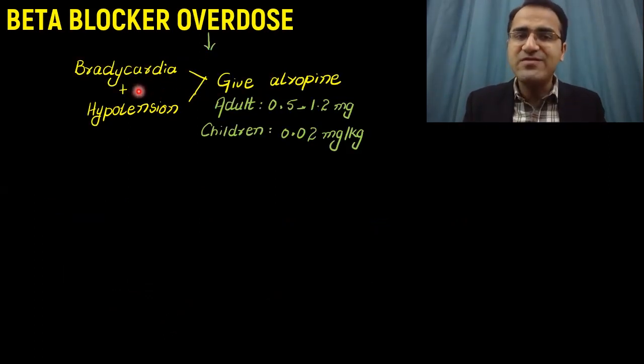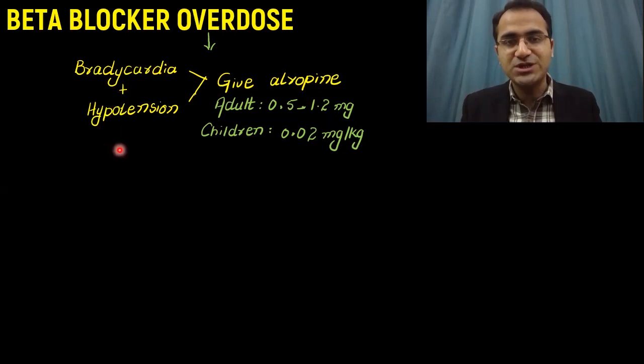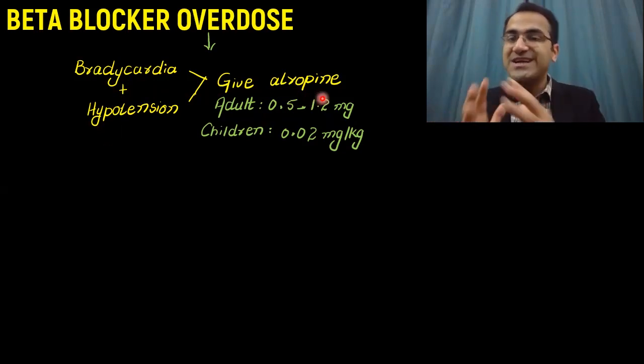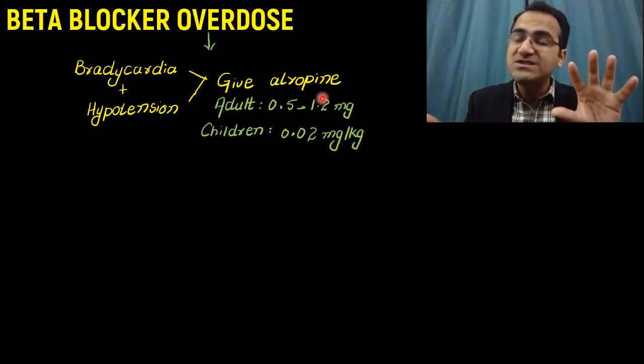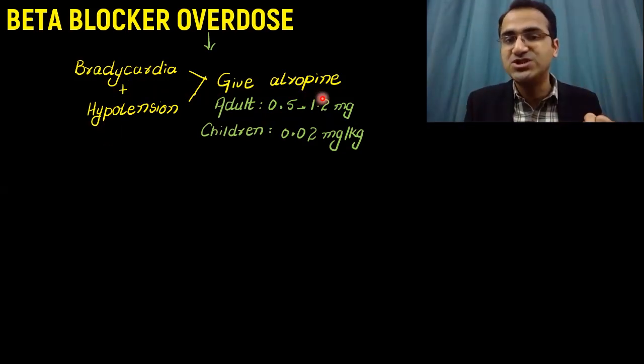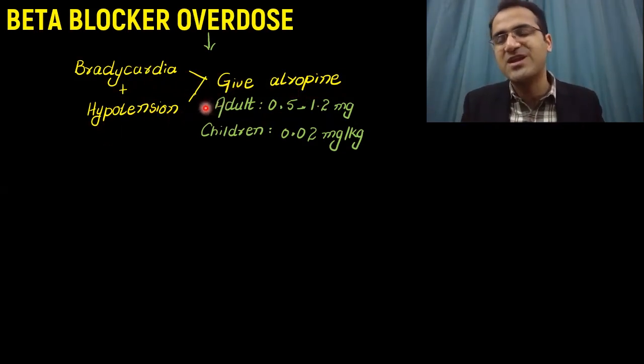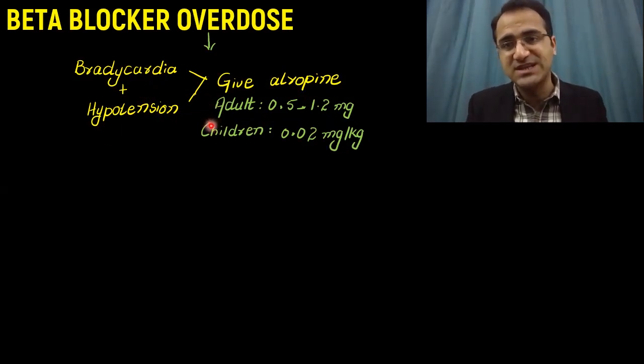If the patient is having bradycardia with hypotension, you have to give atropine. Atropine is an anticholinergic agent. It blocks the parasympathetic nervous system, therefore gives some space for sympathetic nervous system to initiate an action. It can control bradycardia and hypotension. But in beta blocker overdose, atropine is usually not enough for the treatment of bradycardia and hypotension. You have to give other things as well.